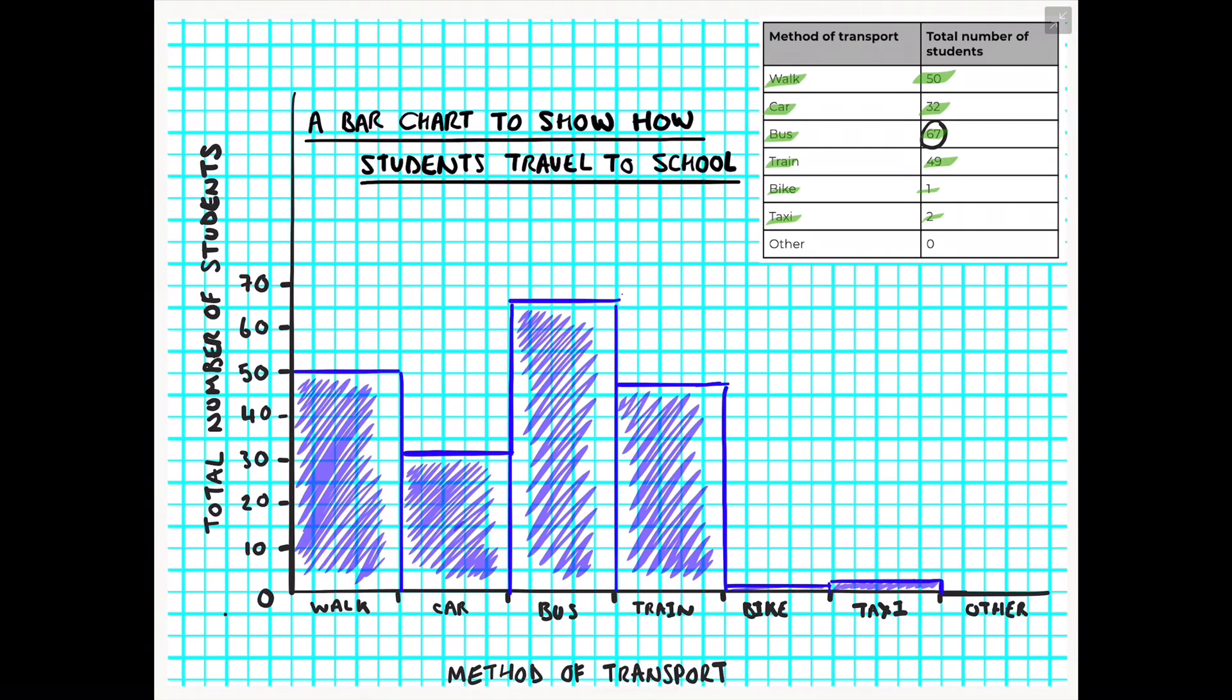Once you have drawn your graph and finished it off with a nice clear title and axis labels, you might want to interpret and pick out what your data is actually showing you. This could be things like: which method of transport was the most popular? In this case it's the bus. Which method of transport is the least common? In which case it is traveling to school via a bike.